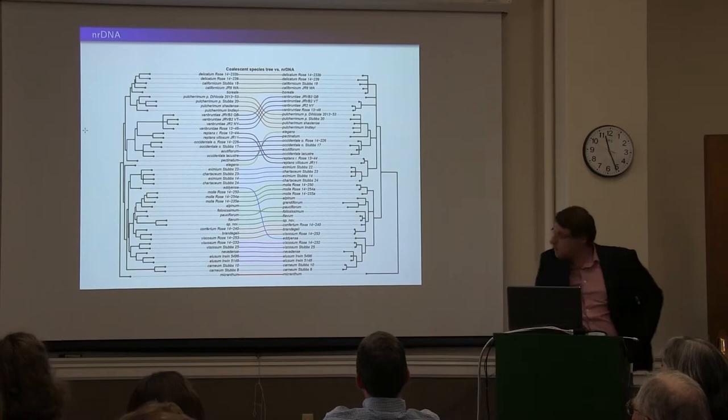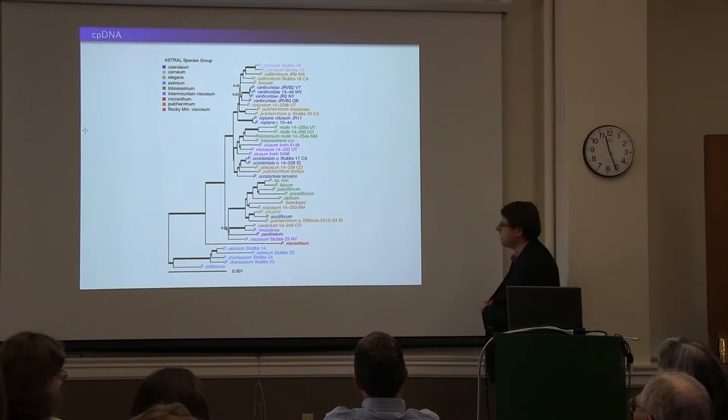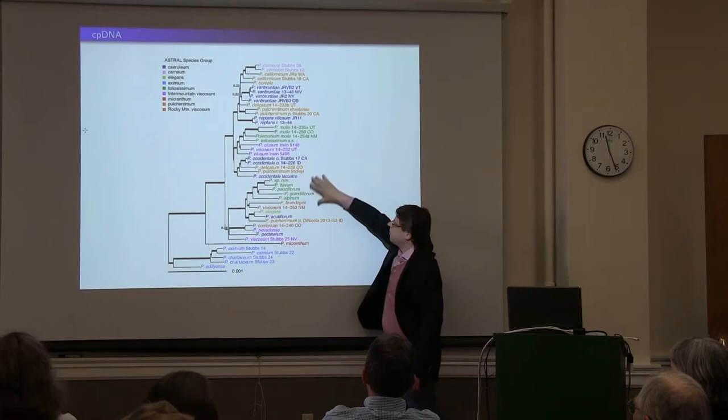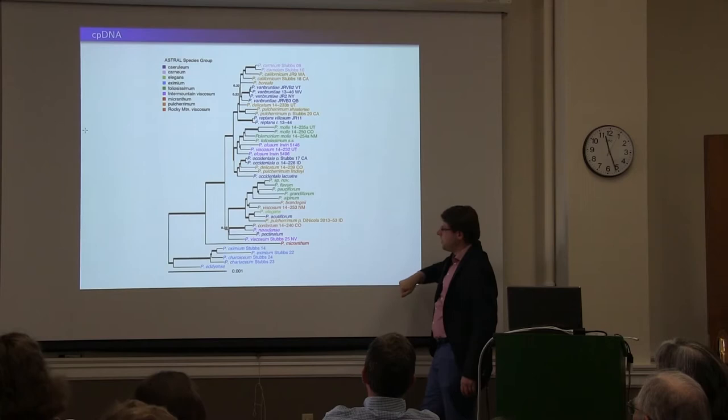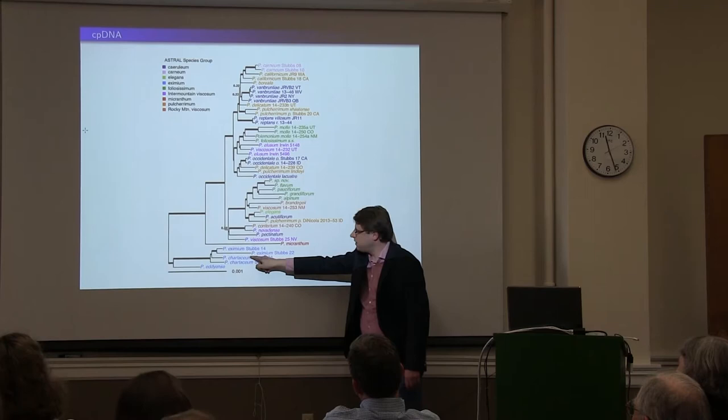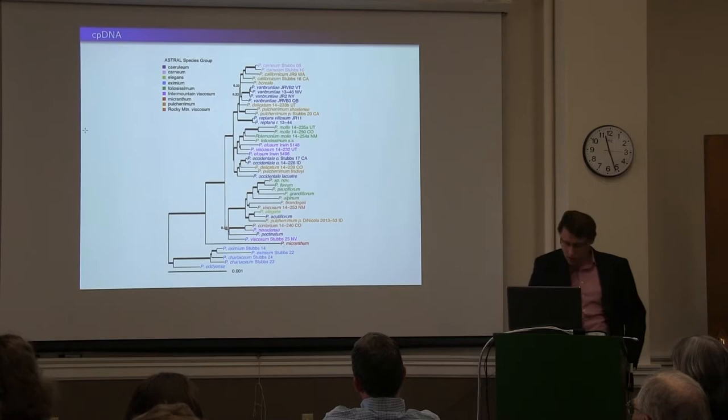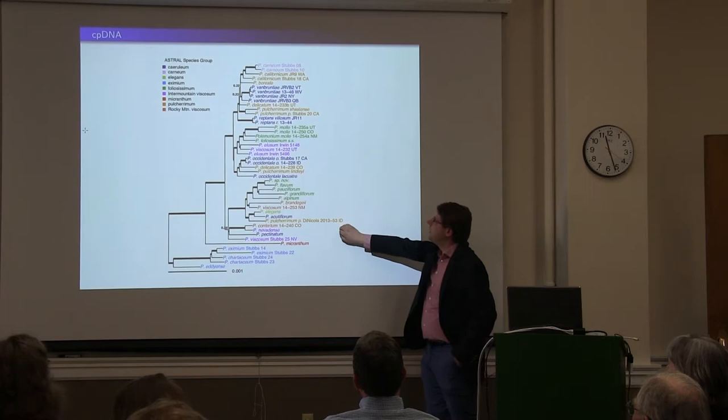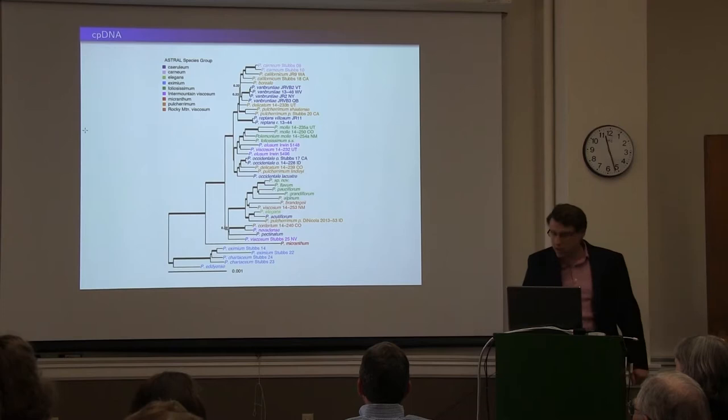The chloroplast is much messier, even though the tree is almost fully supported. You can see blue, yellow, and green all popping up in multiple places. And this light blue lineage, which was embedded within the genus based on the nuclear data, is now sister to the genus based on the chloroplast. This matches up very well with earlier data from about 5,000 base pairs of the chloroplast based on Sanger sequencing — so it's surprising looking, but not surprising based on what we knew previously.